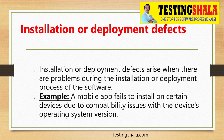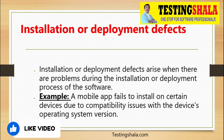The next type is installation or deployment defects. These arise when there are problems during the installation or deployment of the software. For example, if a mobile app fails to install on certain devices due to compatibility issues with the device's operating system, those defects are logged under the installation or deployment defects category.